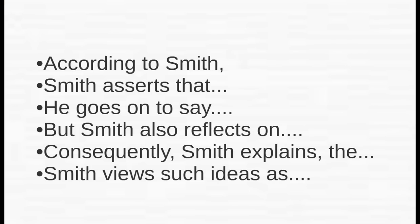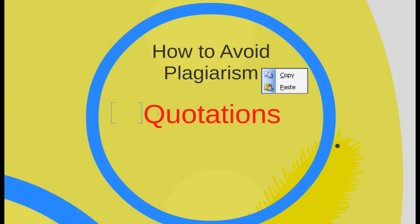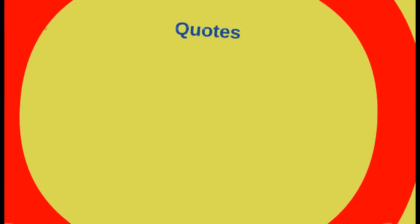There are multiple ways to cite something orally: 'according to,' 'asserts,' 'goes on to say,' 'reflects,' 'explains' — those are just some examples. Another important thing when avoiding plagiarism is understanding you can't just copy and paste a source. You need to understand the difference between quotations and paraphrasing, because there's an important nuance between the two that will be especially important to avoid treading the line of plagiarism.